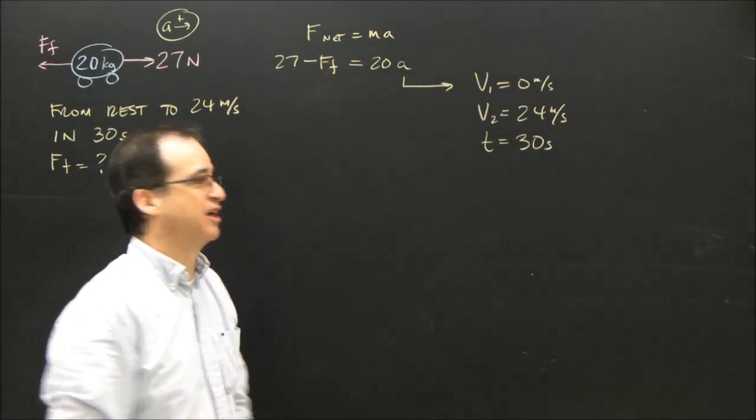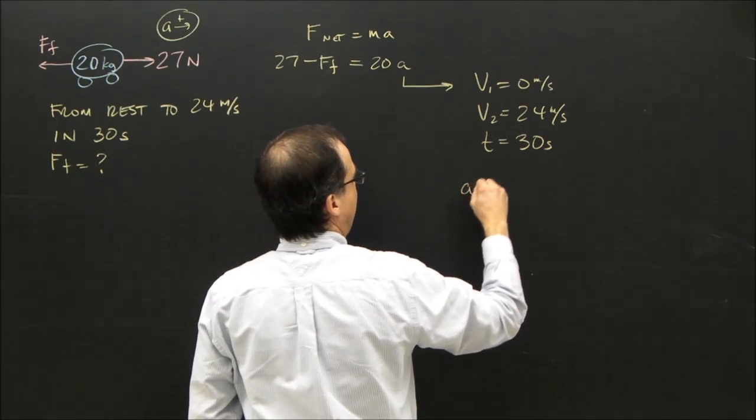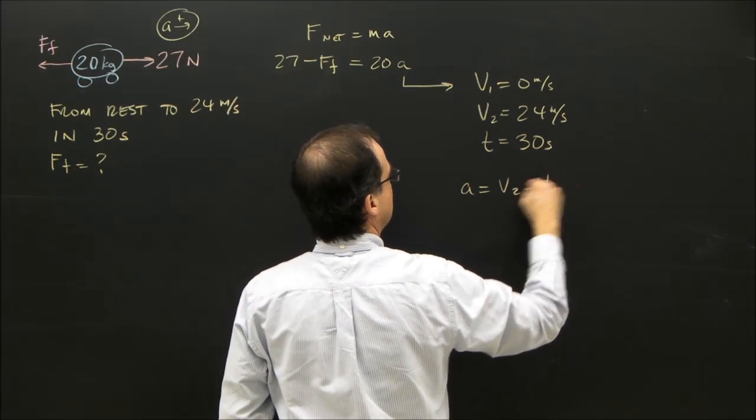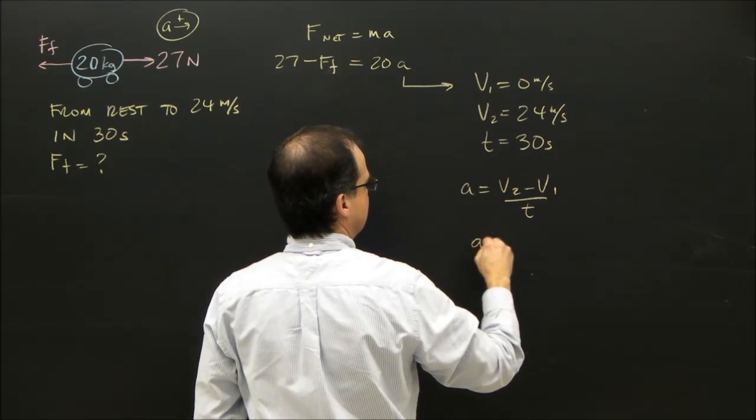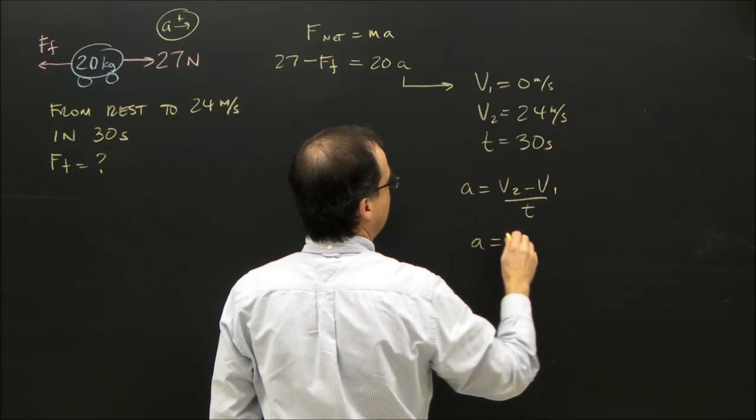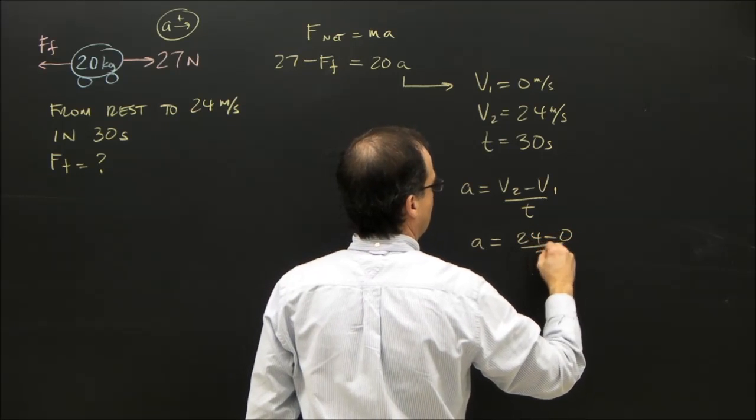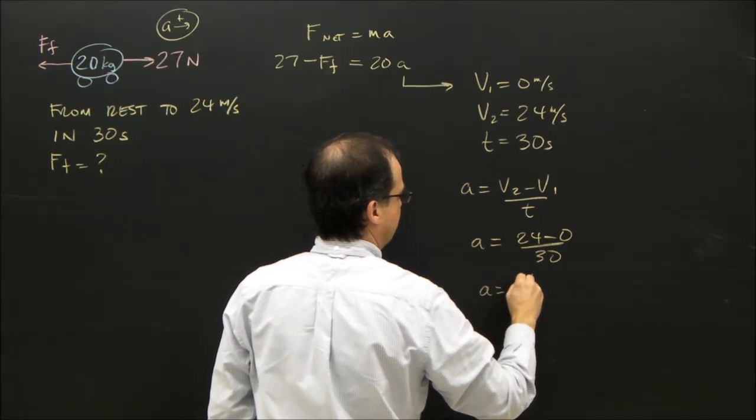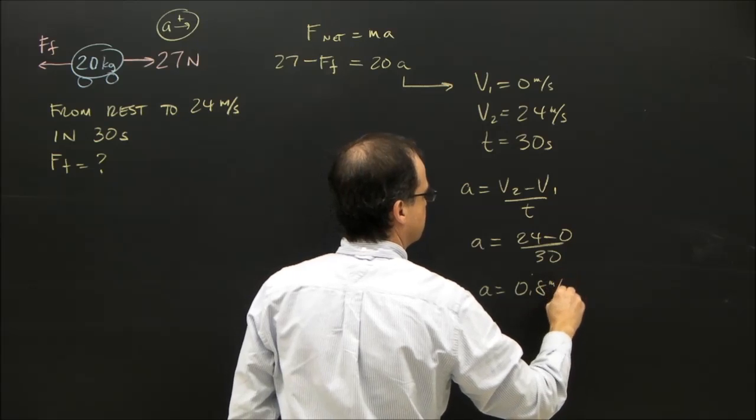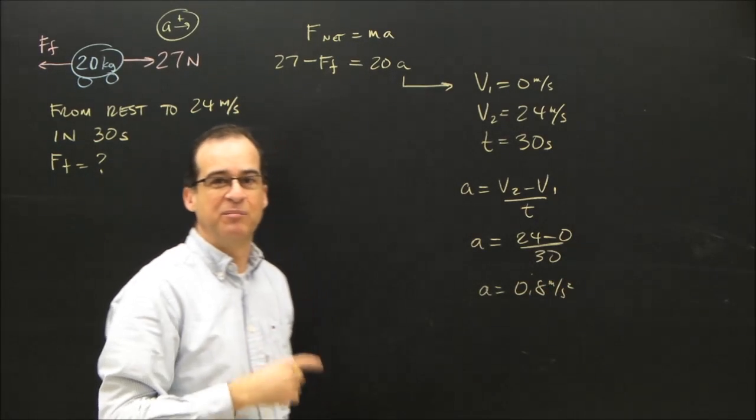So I'm going to use a equals v2 minus v1 over t, in this case. So a equals v2, 24 minus 0 over 30. The acceleration is 0.8 meters per second squared, and it's to the right because it's positive.